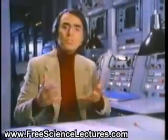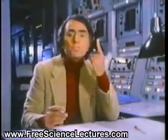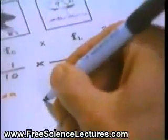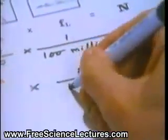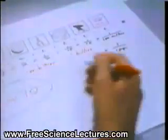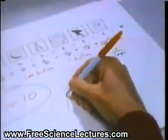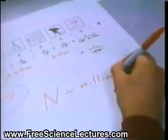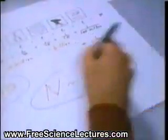But consider the alternative: that occasionally civilizations learn to live with high technology and survive for geological or stellar evolutionary timescales. If only one percent of civilizations can survive technological adolescence, then F sub L would be not one hundred millionth, but only a hundredth. And then the number of civilizations would be a billion times a hundredth — the number of civilizations in the galaxy then would be measured in the millions. Millions of technical civilizations.